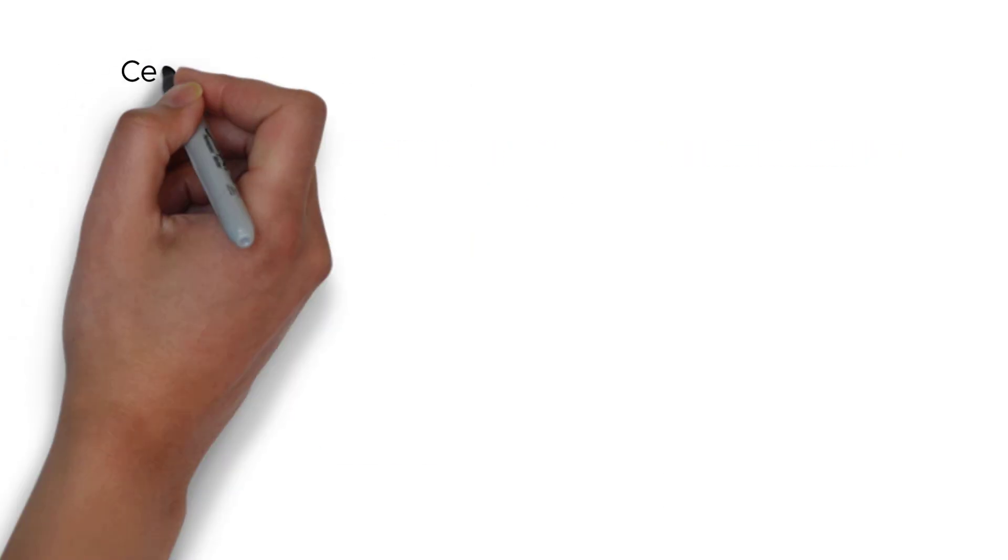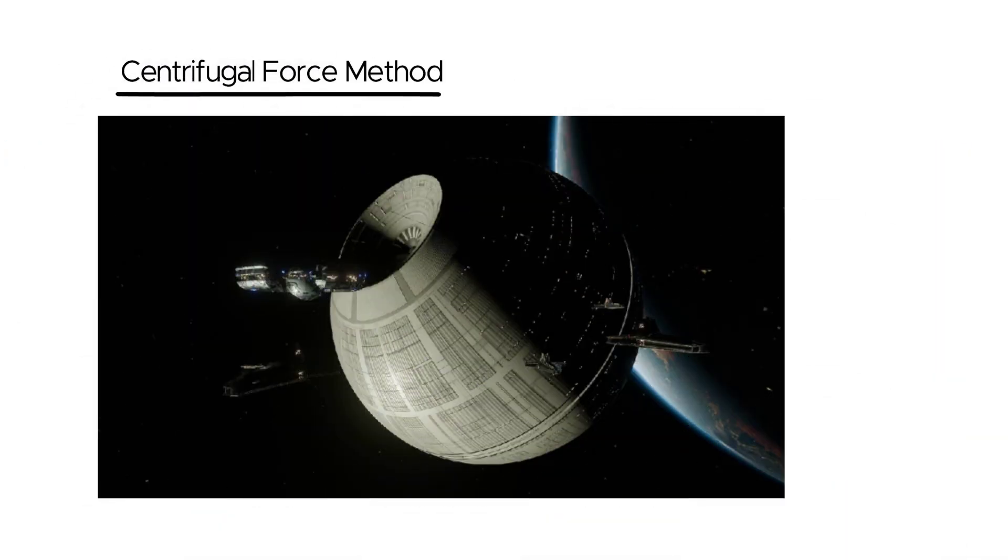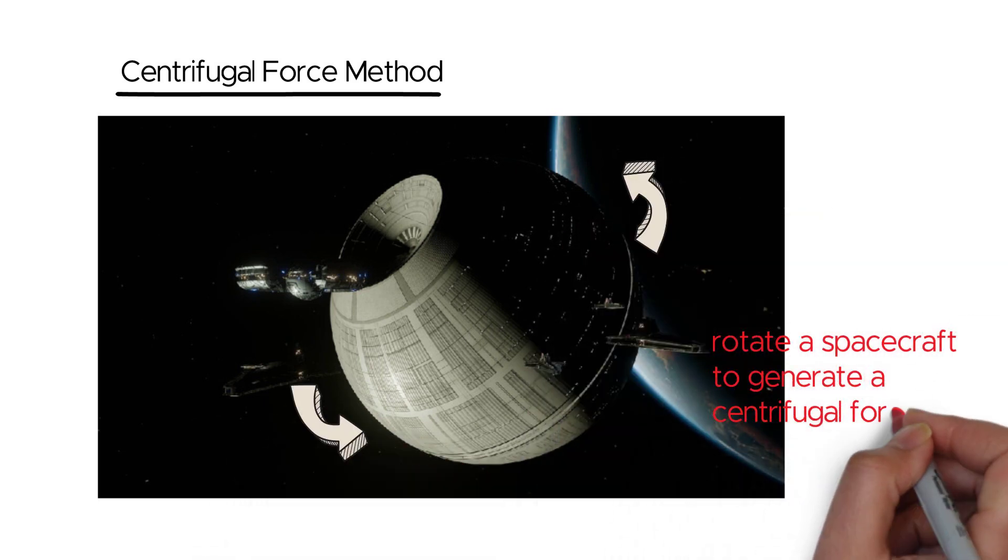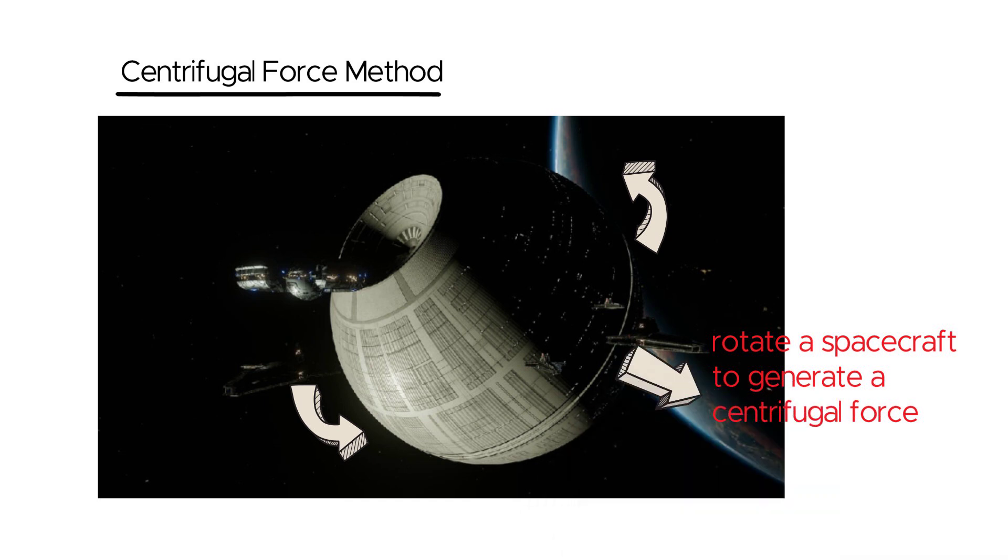Let's delve deeper into the centrifugal force method, as it's one of the most feasible and commonly proposed methods for creating artificial gravity. The basic principle is to rotate a spacecraft or space station to generate a centrifugal force that acts as gravity. The faster the rotation, the stronger the artificial gravity.